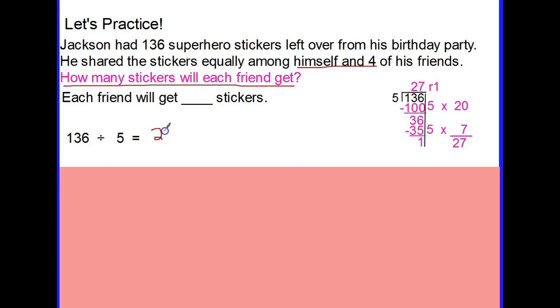My division answer is 27 remainder one, but all of this does not answer the question I am being asked. It's very important for me to understand each part of the division. I need to interpret what this 136 means, what the five means - remember, Jackson and four friends. I need to also interpret the quotient and the remainder. I need to know what all of these parts mean. That's very important for the work that we are doing.